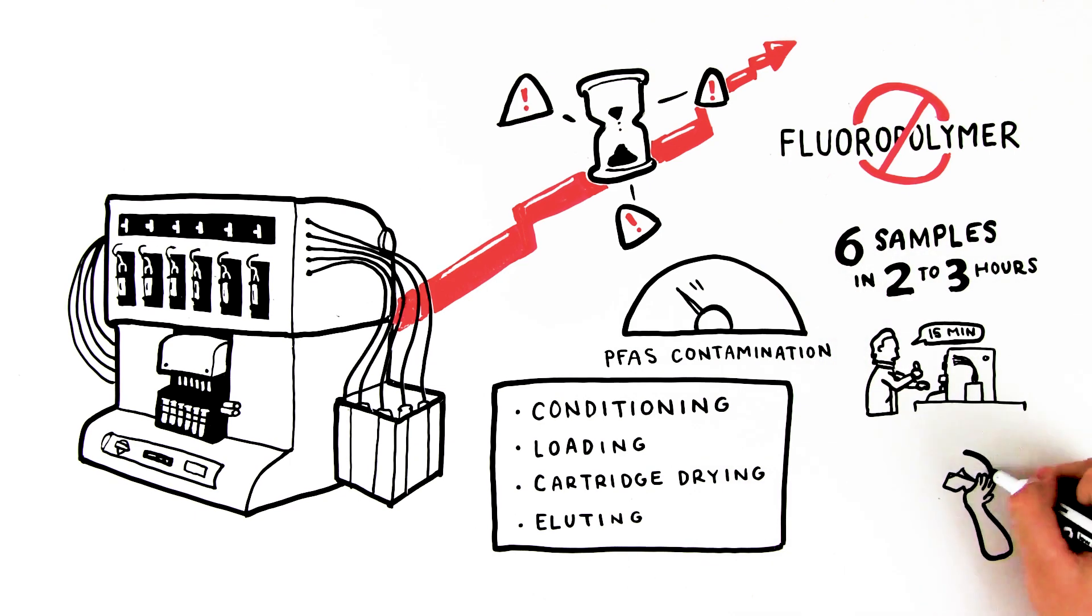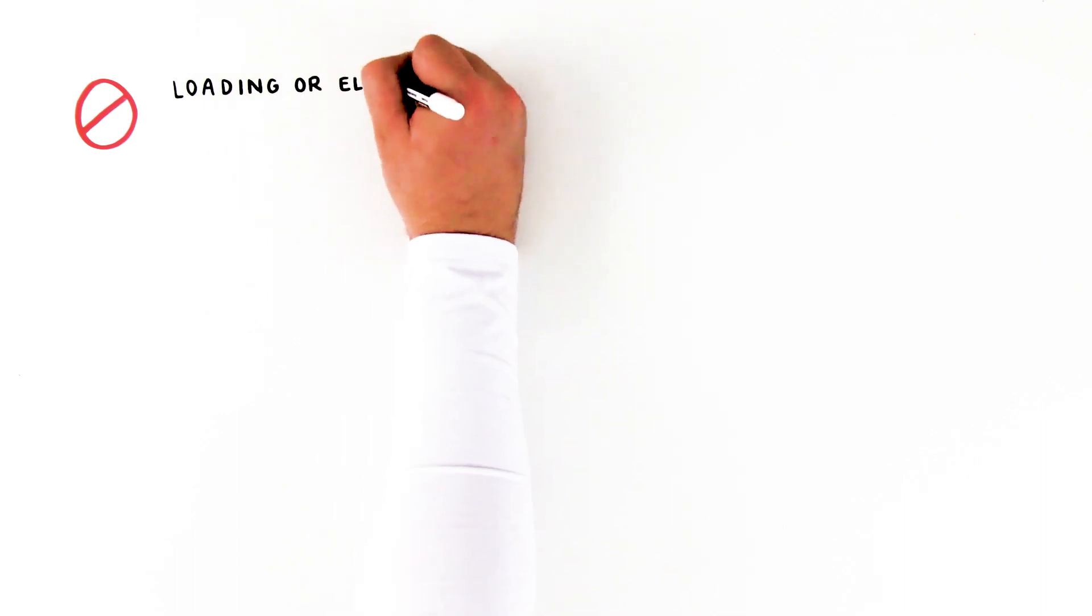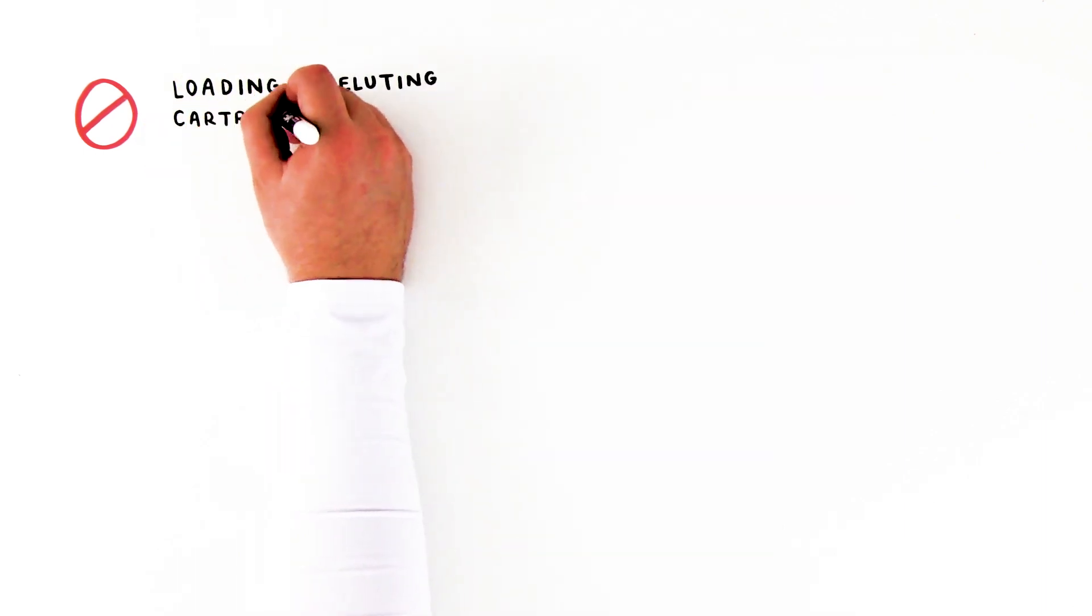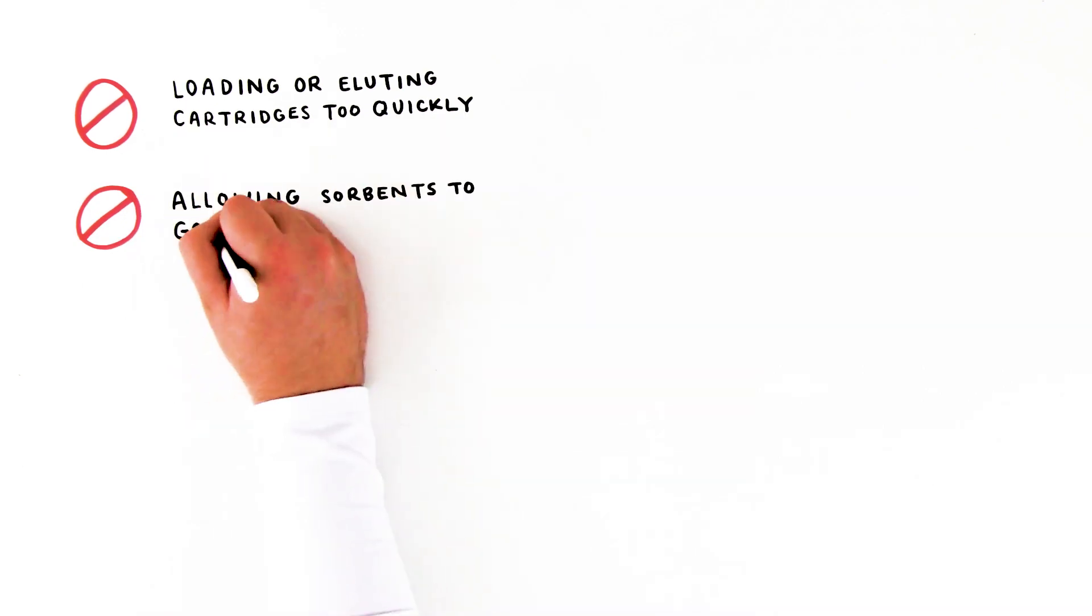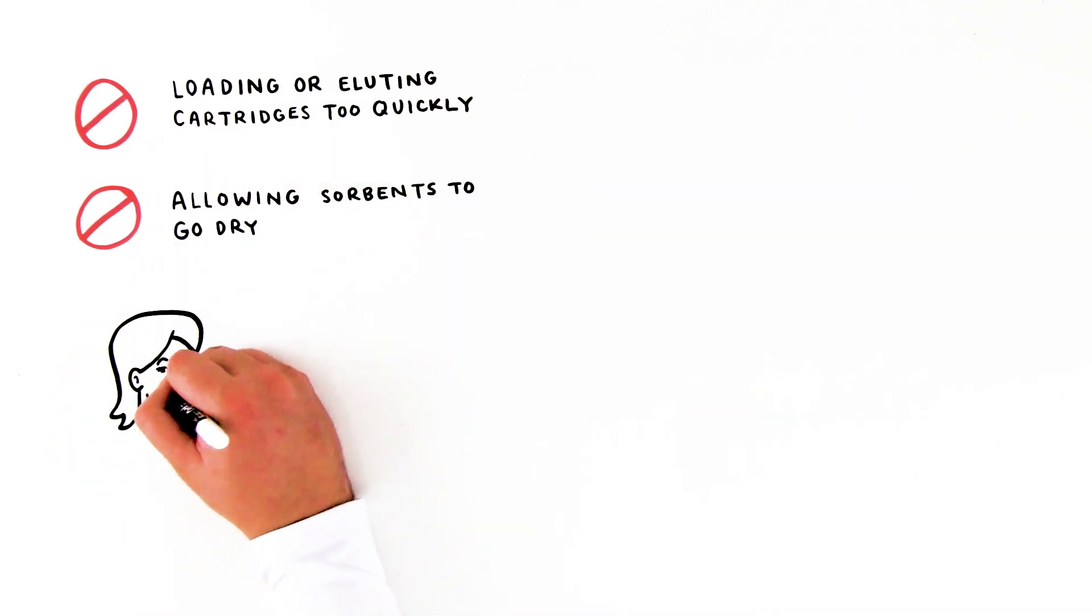So you can leave and focus on more pressing tasks, rather than babysitting the SPE. Plus, it eliminates common errors caused by manual preparation, such as loading or eluting cartridges too quickly, or allowing sorbents to go dry when they shouldn't. So you can be more confident in the results you produce.